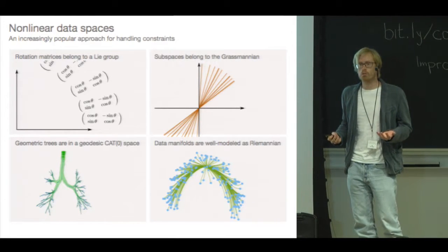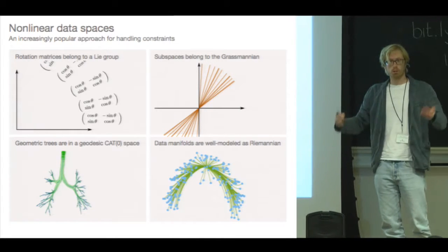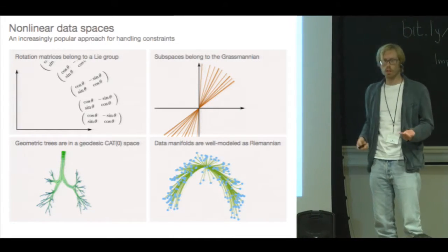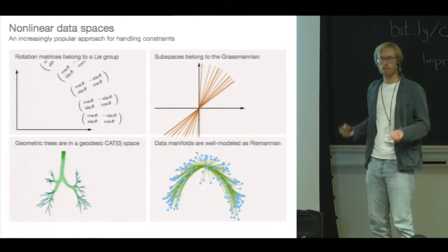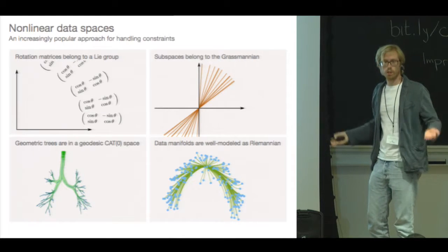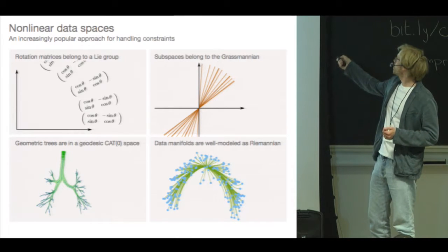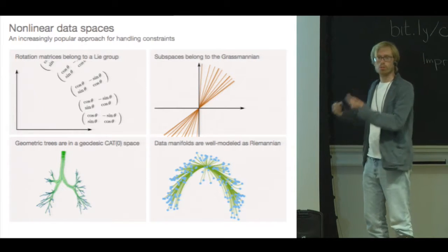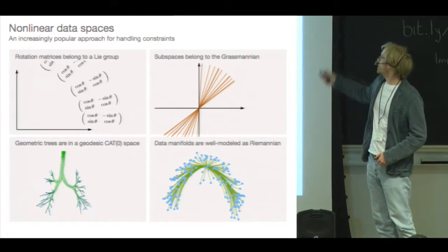So for instance, imagine that you observe a collection of rotation matrices, and you then want to build a classifier on top of those. Now, rotation matrices belong to a non-linear Lie group, so you want to build a classifier that respected that Lie group. Likewise, imagine that you observe a collection of subspaces. This is something people do in domain adaptation, for instance. Subspaces are points on the Grassmannian, so we do want to build systems that respect the geometry of this Grassmann Manifold.